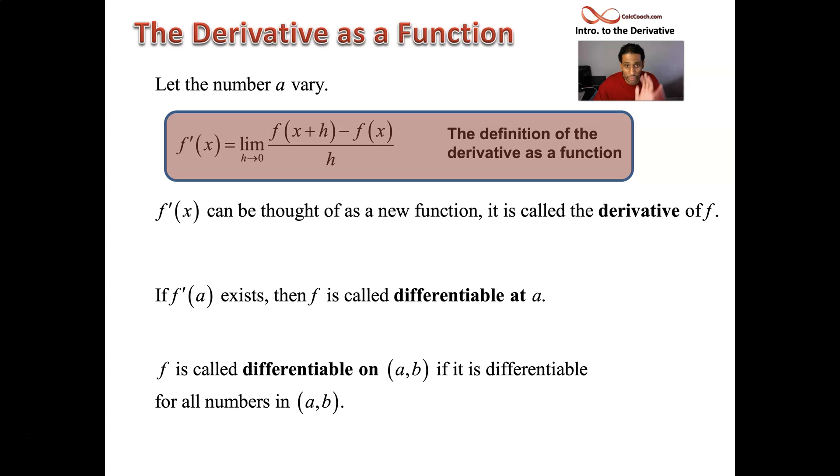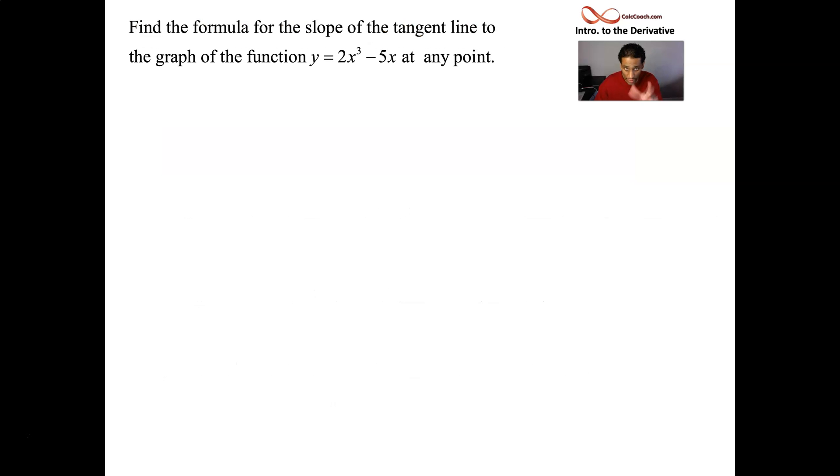Let's go back to that very same function that showed up in the first video in this series. This cubic 2x cubed minus 5x. And now I want to be able to calculate the slope of the tangent line at any value of x. Not just that negative 1 like we did twice. What about at any value?